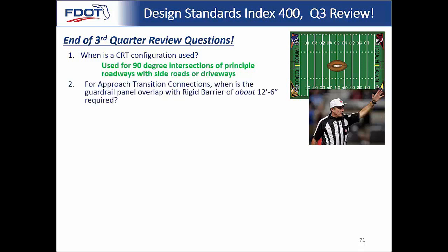Question 2: For approach transition connections, when is the guardrail panel overlap with the rigid barrier of about 12 foot 6 inches required? That's for the double-faced guardrail connections. For double-faced guardrail, you require that extra overlap to transition the width of the guardrail system to the width of the rigid barrier system.